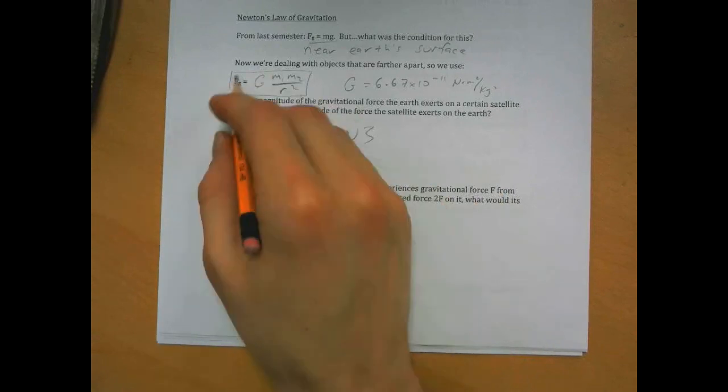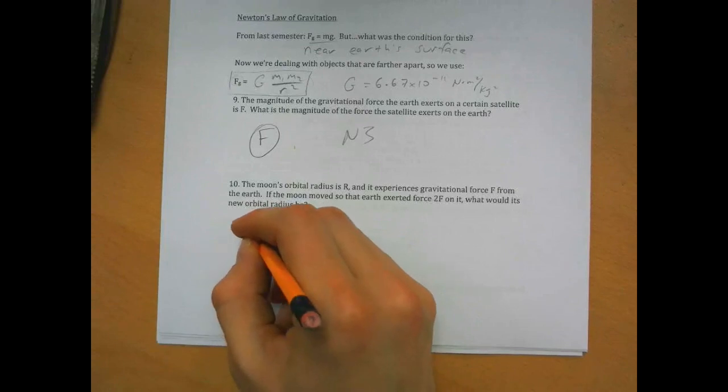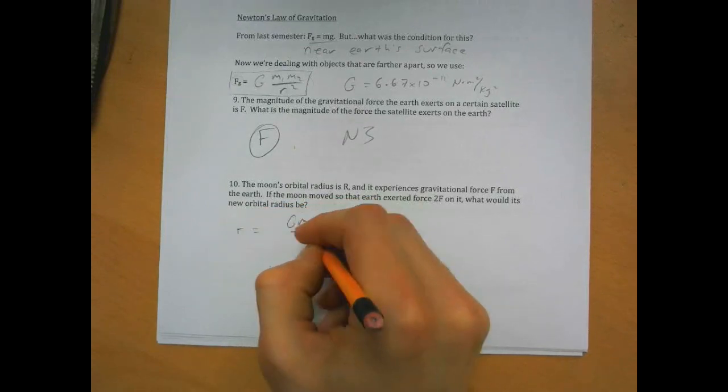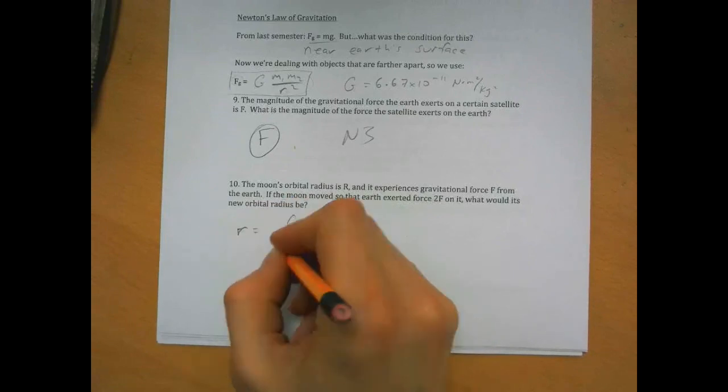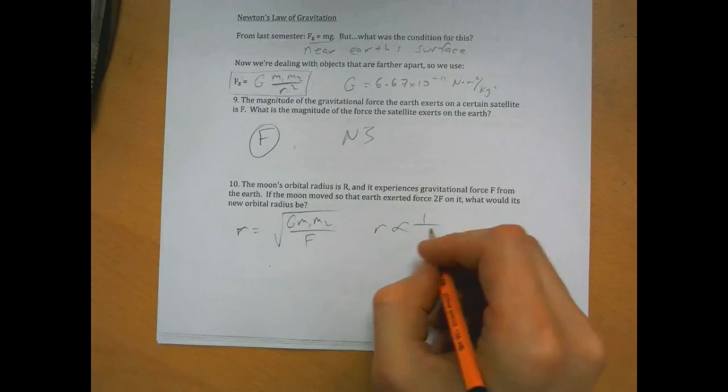So that would get us that r squared equals g m1 m2 over F, and if r squared equals that, we take the square root, so we can see that r is proportional to 1 over square root of F.